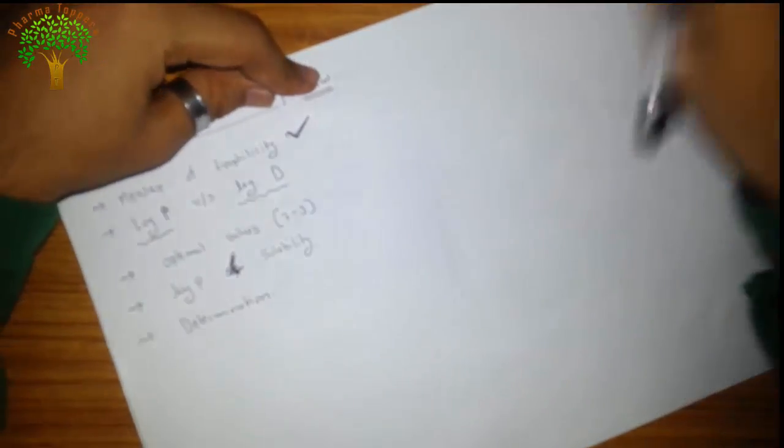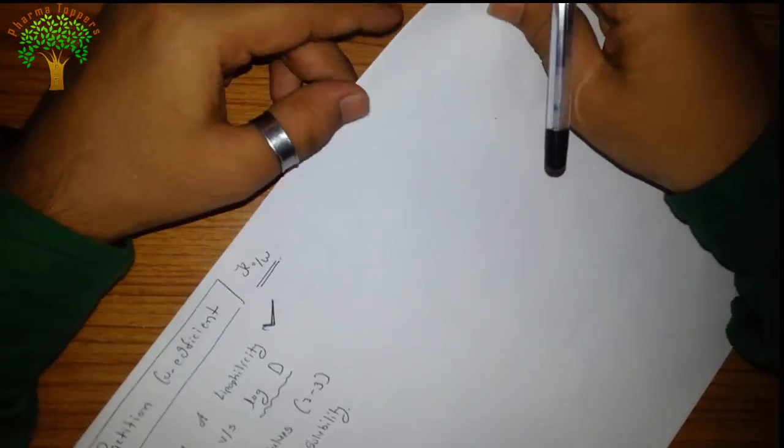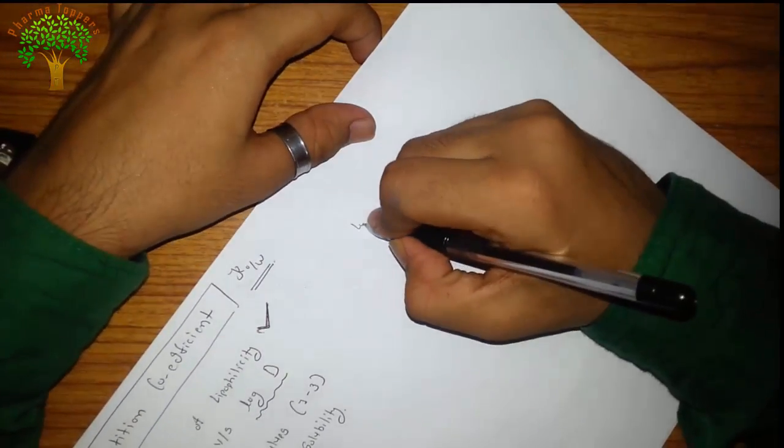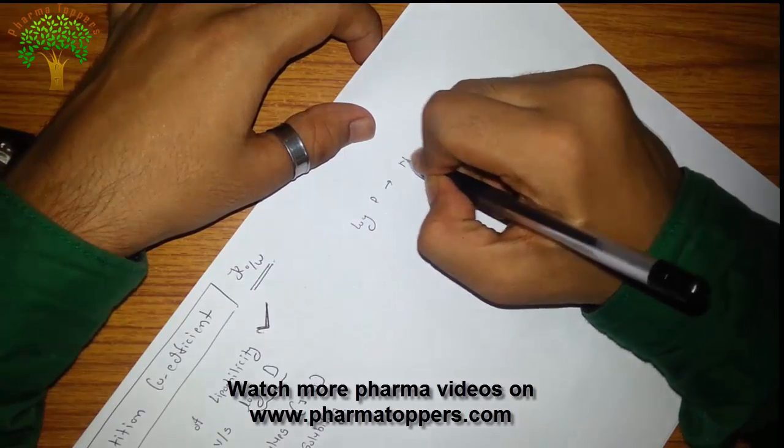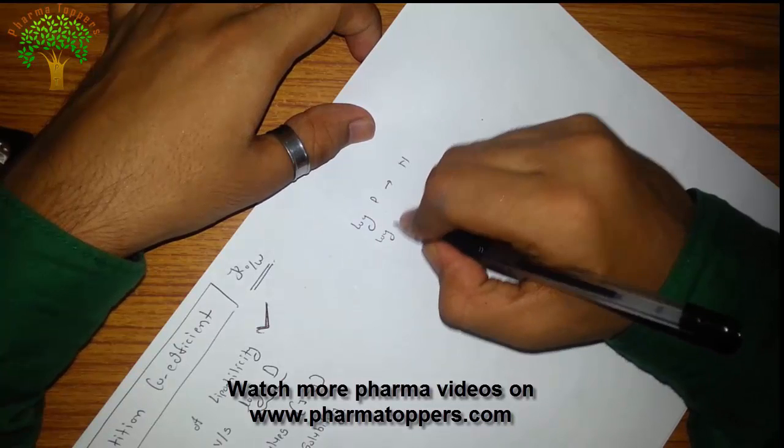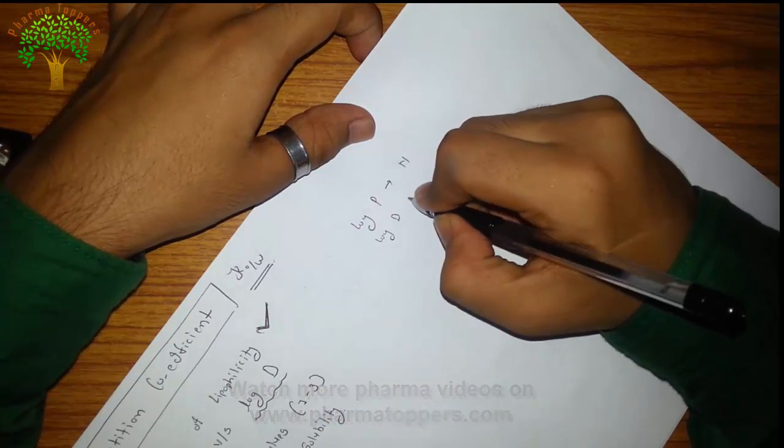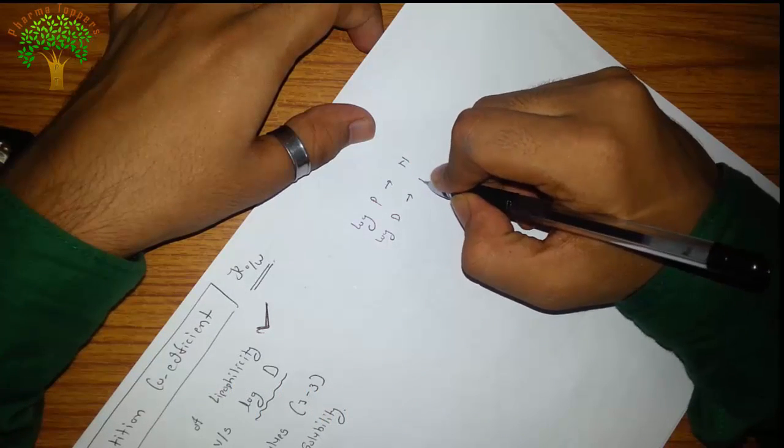What is log p and log d? What is the main difference between log p and log d? In very simple terms, log p is always there for neutral compounds, while log d is for ionizable compounds.